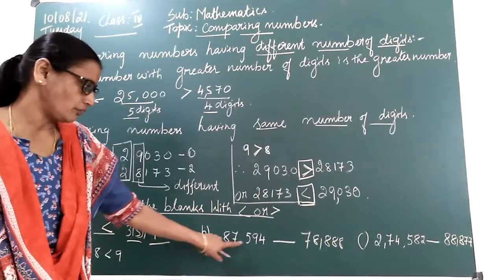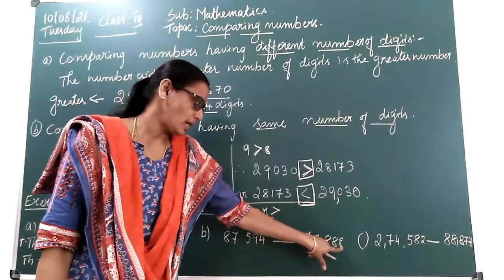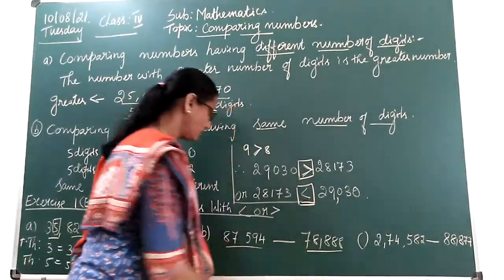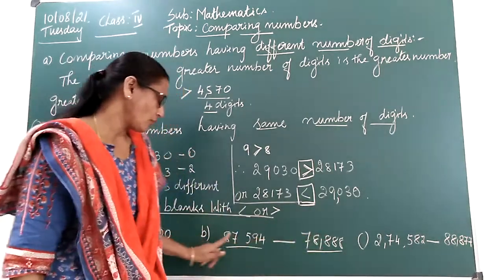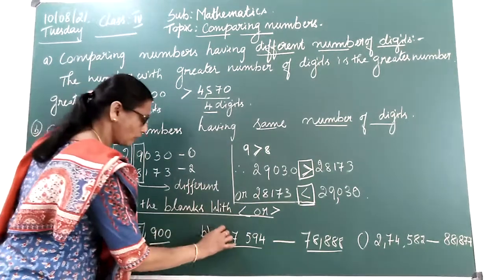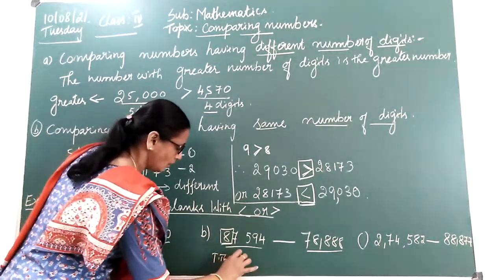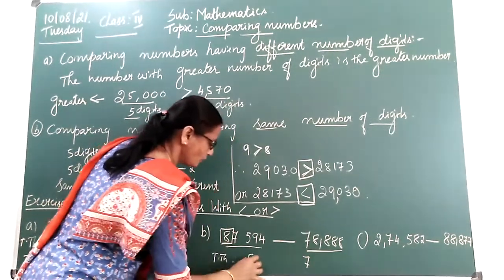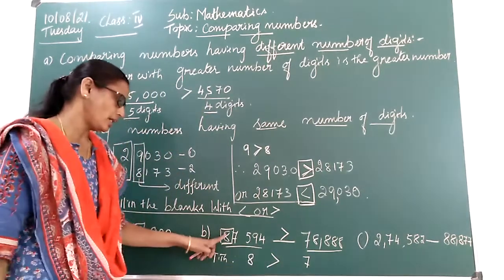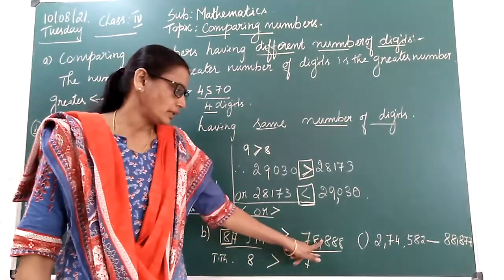Next sum: 87,594 and 78,888. Both numbers have the same number of digits — that is 5 digits. We have to compare from the left side, starting from the highest place. In the 10,000 place: 8 and 7. 8 is greater than 7. Therefore, 87,594 is greater than 78,888.